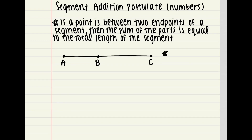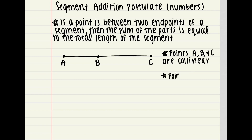There are a few things you do need to know about these points. First, points A, B, and C are collinear — remember, that means they can be connected by the same line. And then you need to know that point B is between A and C, so it's between A and C on segment AC.